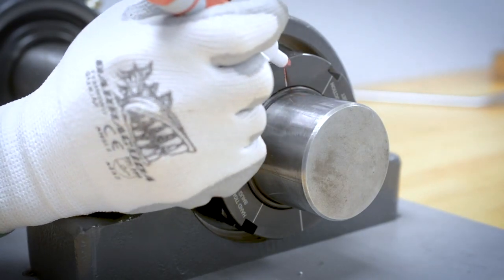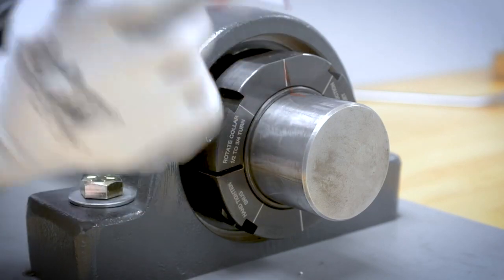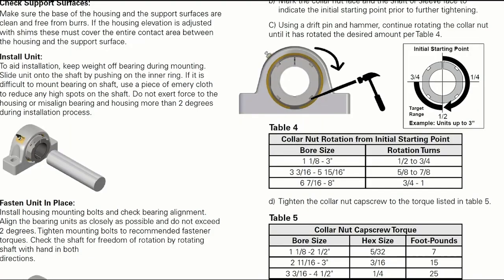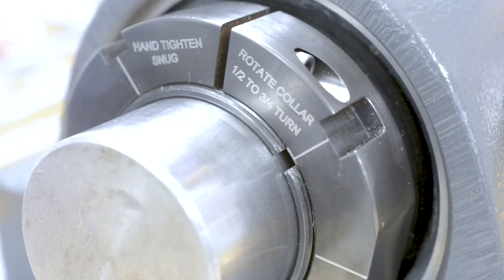Alternatively, note the location of one of the laser-etched tick marks on the collar in relation to the sleeve split. Refer to the installation guide for the rotation specification to achieve full line the collar nut, or simply read the note on the collar nut.